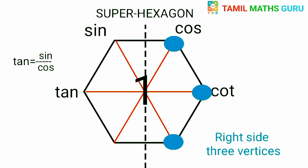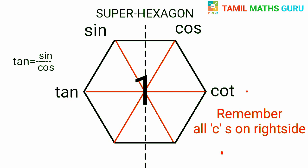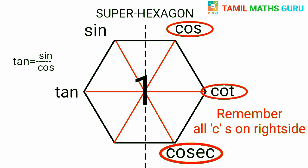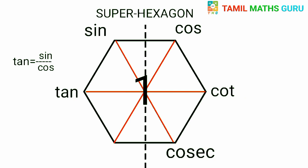We choose sec-theta and cross. From the right side three functions, we start with sec-theta. The number of sec-theta is a single number, and again sec-theta is equal to sec-theta.